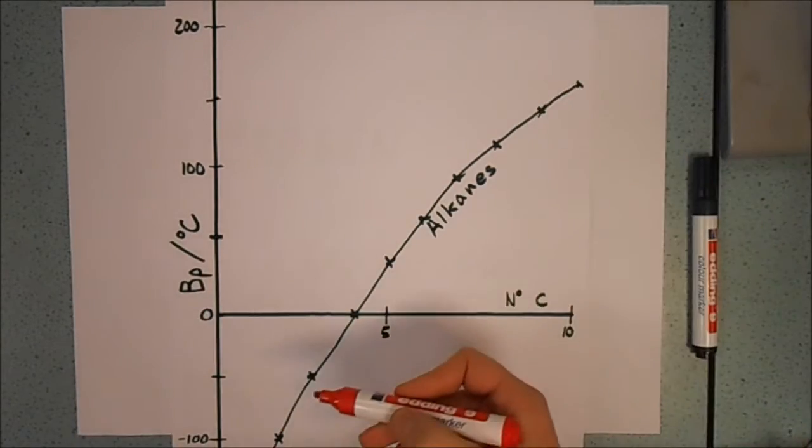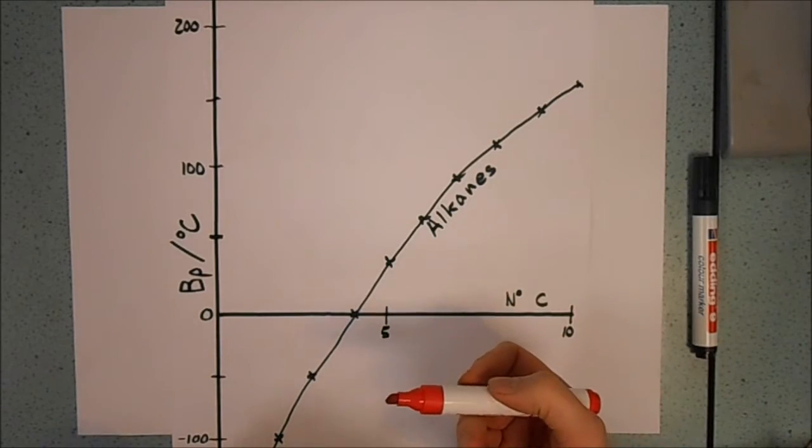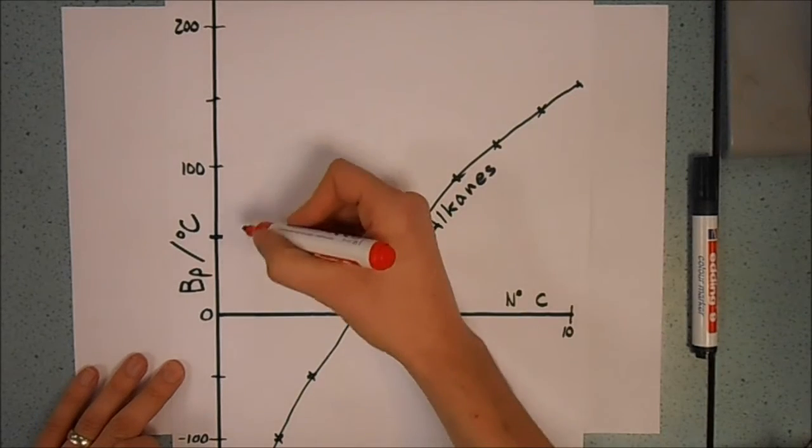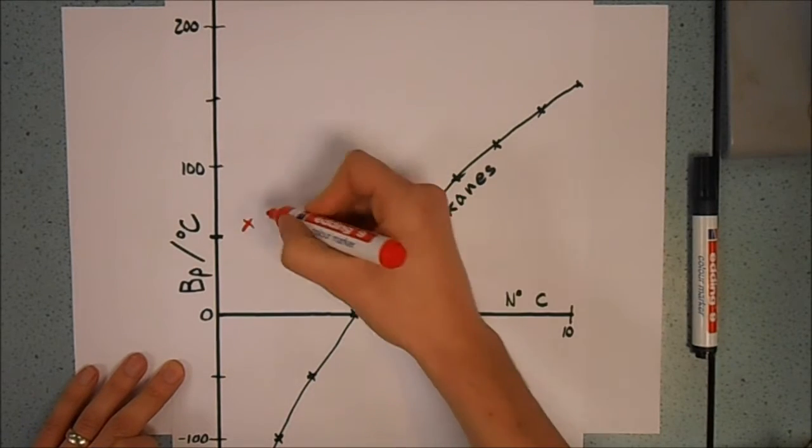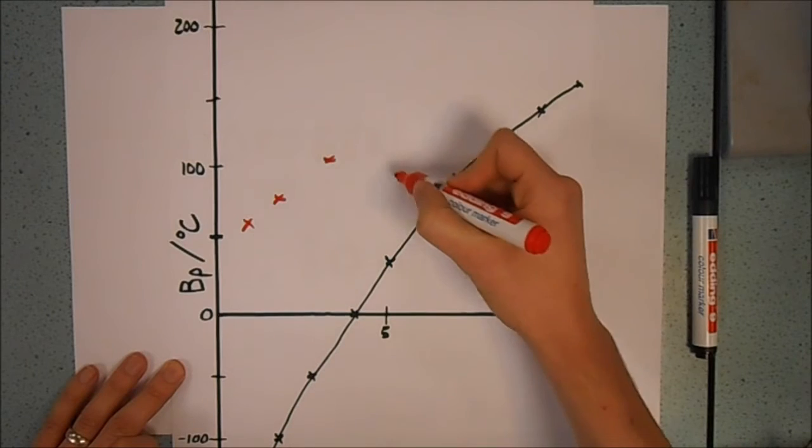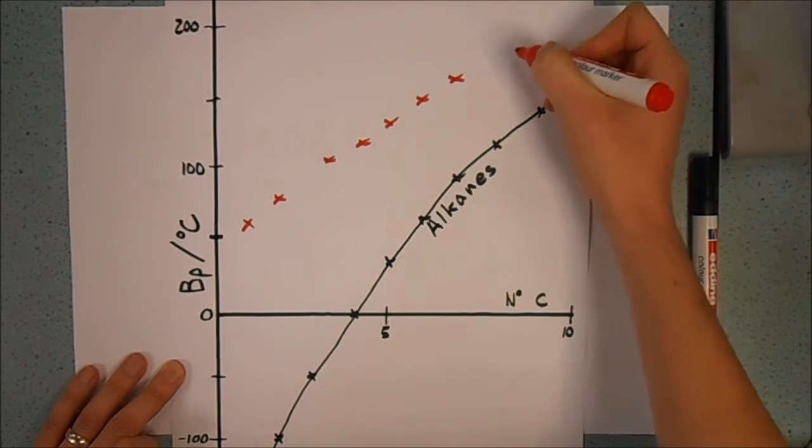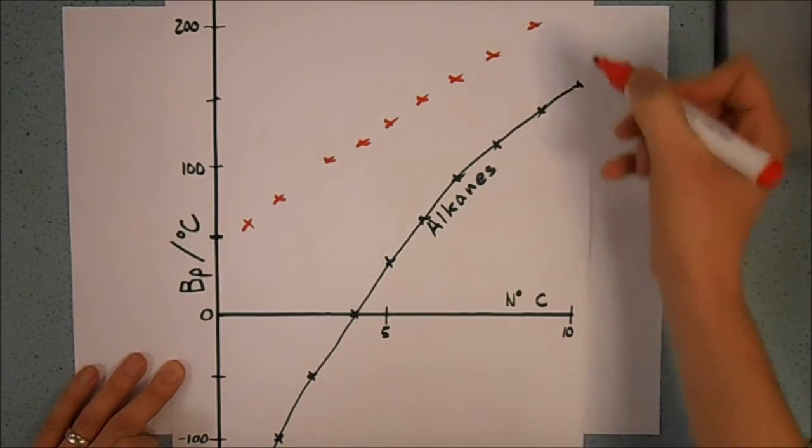So what happens when we look at the same pattern in the alcohols? Well, what happens is we find that we end up plotting them somewhere completely different, roughly about here, like that.